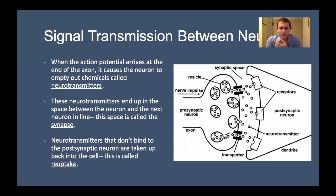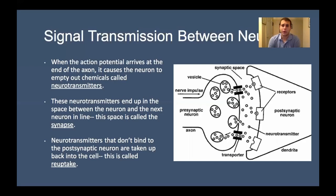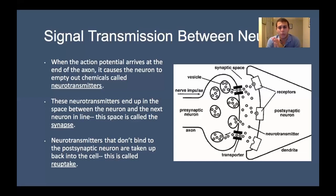Those neurotransmitters will end up in the postsynaptic neuron binding to receptors on its very surface. There are a bunch of different types of neurotransmitters — either they can signal to the next neuron to keep going, or signal it to stop. They can be inhibitory, which tells it to stop, or excitatory, which tells it to continue and create another action potential. This is called the lock and key model — each neurotransmitter has a very specific shape that fits into very specific receptors on the postsynaptic neuron. The triangular one will fit in but the circular one won't — it's quite literally a lock and key.